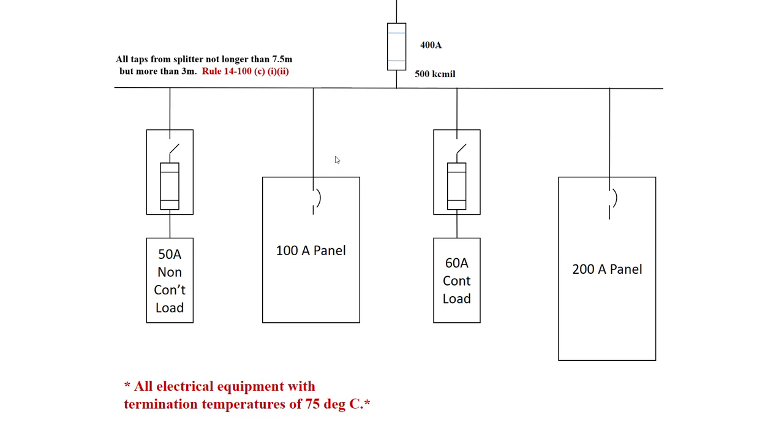The critical thing here is this is the one-third rule. Going to table 2, we'll use RW90. All terminations are 75 degrees Celsius. We could also use RW75 or R75. In the 75 degree column, the ampacity of our 500 KC mil is 380 amps. Divided by three to get one-third, that comes to 126.67 amp minimum. That's one of our minimums. The other is that it has to be able to supply the load.